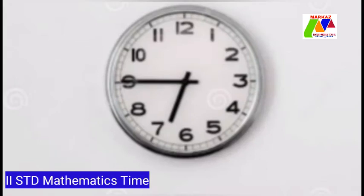Here is another example of a clock. In this clock, the hour hand is between 6 and 7. The minute hand is at 9. 9 multiplied by 5 minutes equals 45 minutes. We say 6:45 or quarter to 7, because we need 15 minutes to complete the hour. We can write it as 6.45.